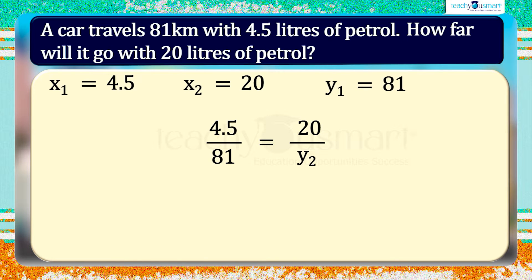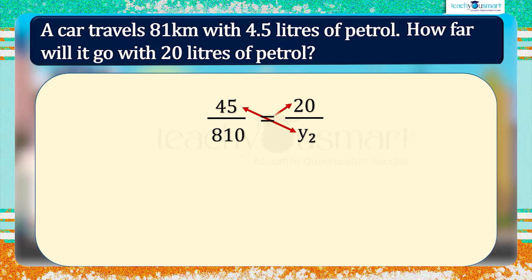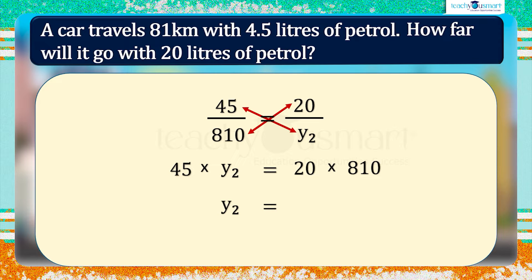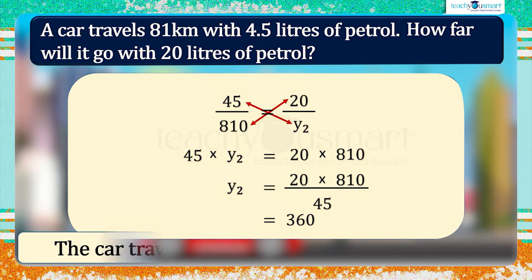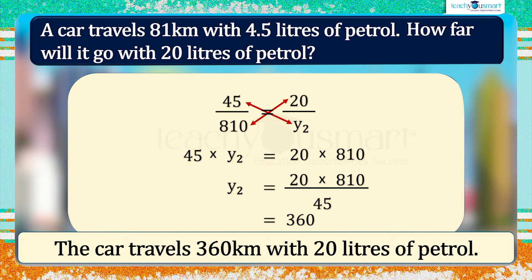Multiplying both 4.5 and 81 by 10, we can write it as 45 by 810 equals 20 by y2. By cross multiplying, we get 45 multiplied by y2 equals 20 multiplied by 810. Therefore, y2 equals 20 multiplied by 810 divided by 45, which equals 360. Therefore, the car travels 360 kilometers with 20 liters of petrol.